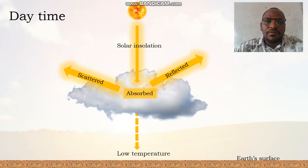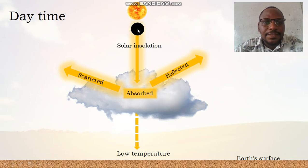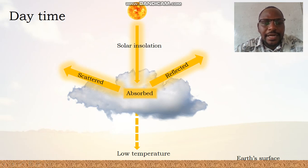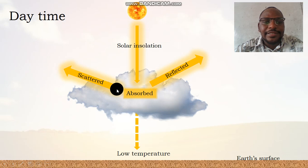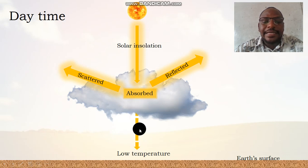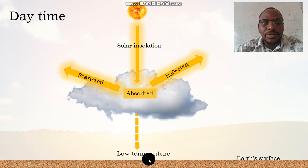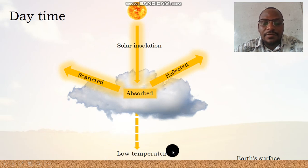What happens when we have clouds? During the day, solar insolation from the Sun meets the clouds. The clouds will reflect back solar insolation into the atmosphere. Some of the heat energy will be absorbed by the clouds and other heat energy will be scattered into the atmosphere. This implies that very little heat energy will reach the Earth's surface, meaning limited solar insolation, hence limited terrestrial radiation and definitely low temperatures.